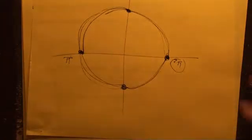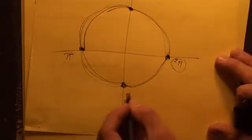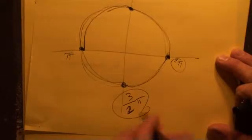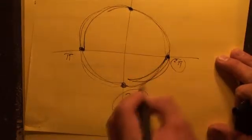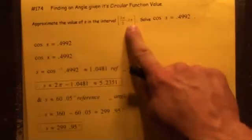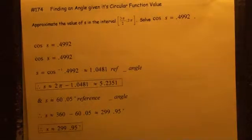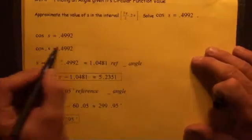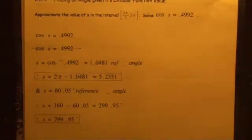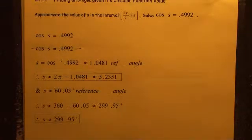So therefore you're dealing with this interval right here — Quadrant 4. We need to do inverse cosine to solve this. We get 1.0481 for the reference angle.